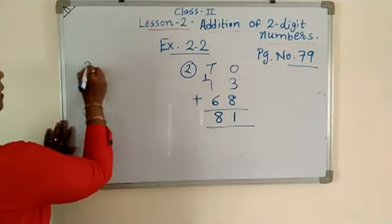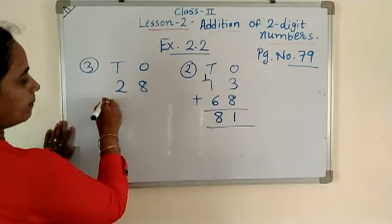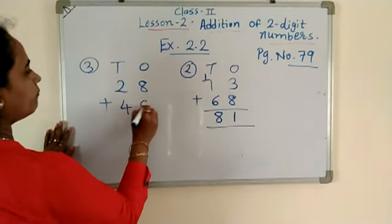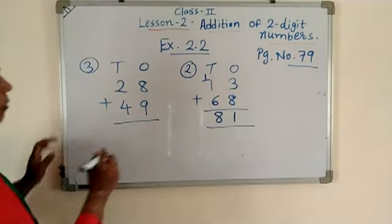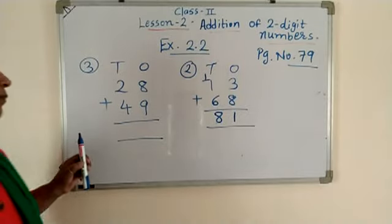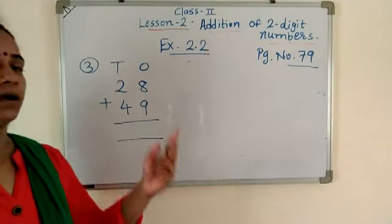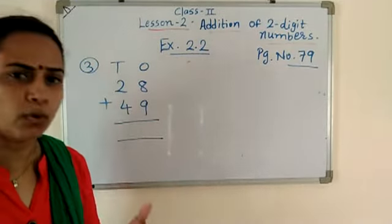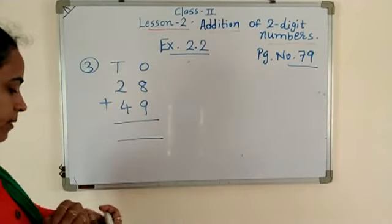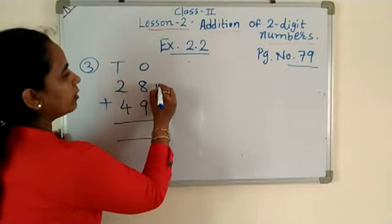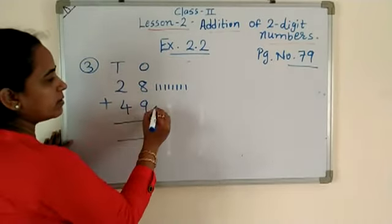Number 3. Okay? 10's, ones. 28. 28 plus 49. Okay? Now look at here. If you have problem in counting, so in 1's place, 8 plus 9. Okay? You have 8 plus 9. So you have 1, 2, 3, 4, 5, 6, 7, 8. 8 lines draw here also. How many lines? 9. 1, 2, 3, 4, 5, 6, 7, 8, 9. Okay?